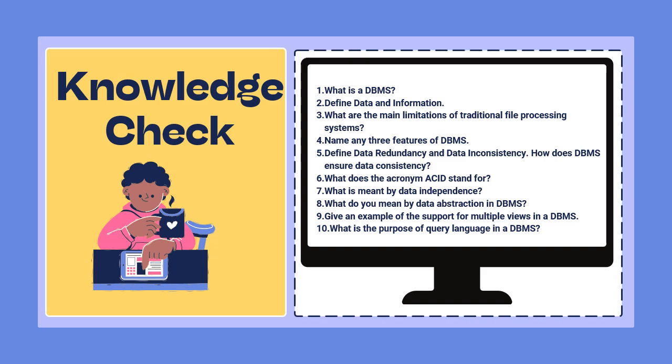I hope the content we discussed is very clear for everyone. Here are some questions to check your knowledge: What is DBMS? Define data and information. What are the main limitations of traditional file processing systems? Name any three features of DBMS. Define data redundancy and data inconsistency, and how does DBMS ensure data consistency?